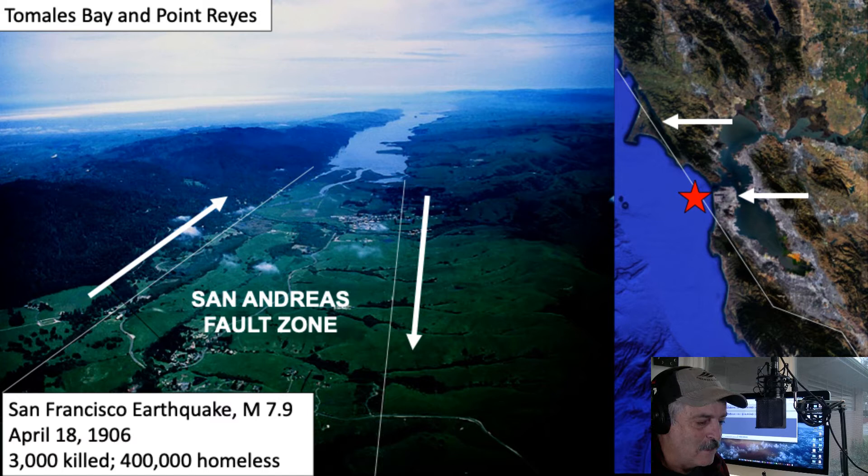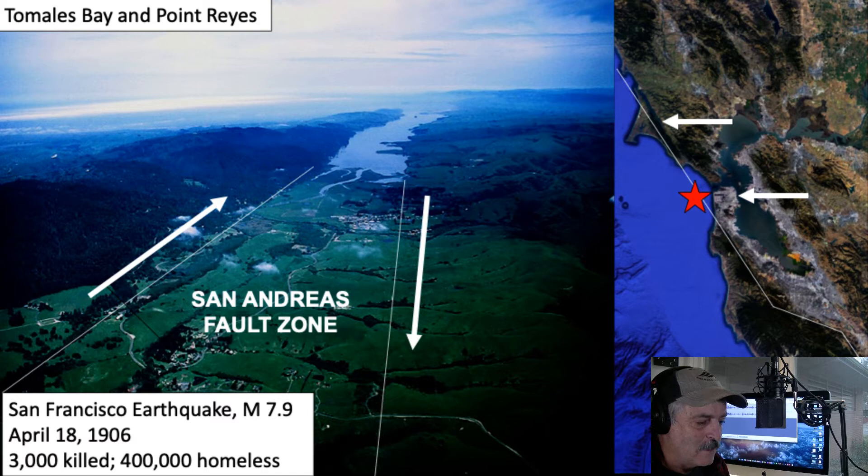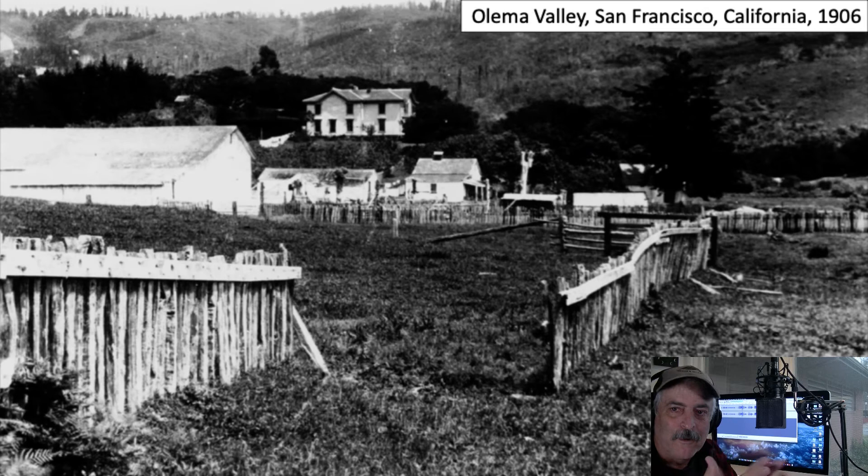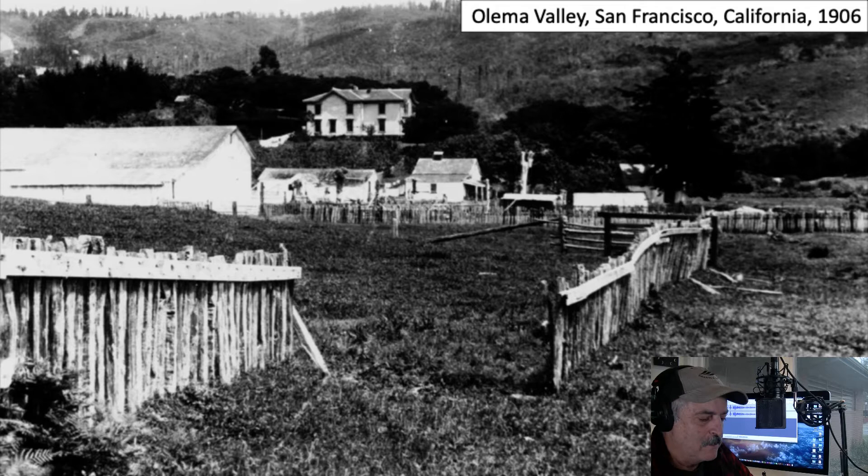We'll talk about 1989 soon. This is the 1906 earthquake location in the San Francisco Bay area — Olema Valley, where the Point Reyes Peninsula connects to the main land of California. Here you can see an early photograph from 1906 where one of these fences had been offset — probably about 10 to 15 feet.